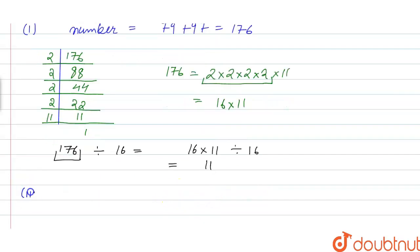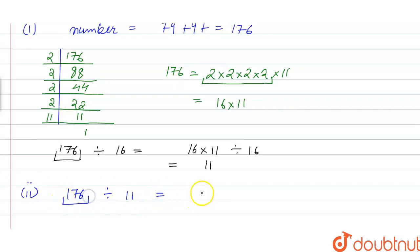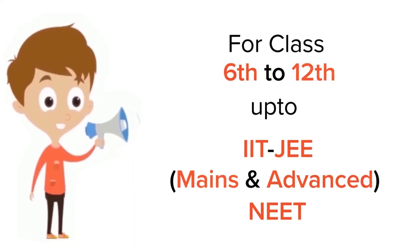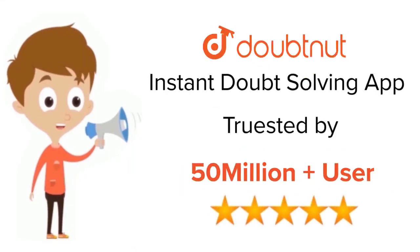For the second part, 176 is divided by 11. We can write 176 as 16 × 11, divided by 11. So we get the quotient equal to 16.